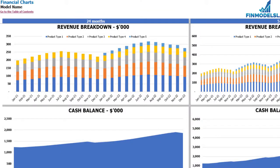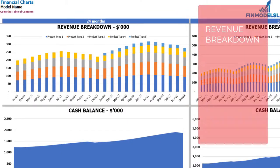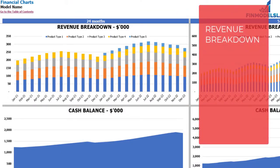On the financial charts tab you may see the main financial outputs in graphical form. On the left side you may see the chart for the 24 months and on the right side you may see the chart for the 5 years or 60 months.